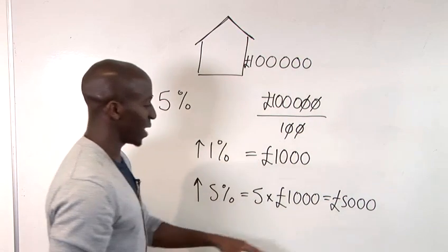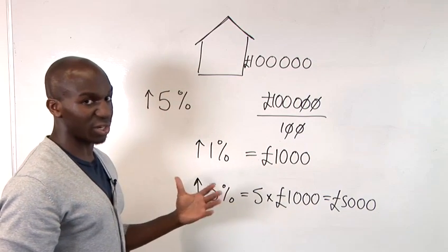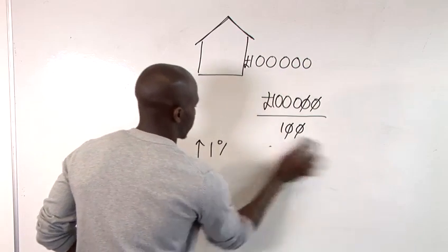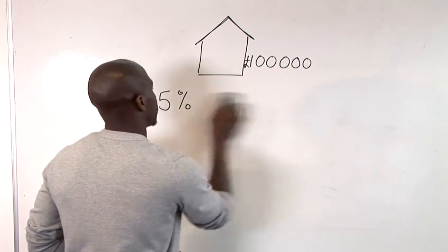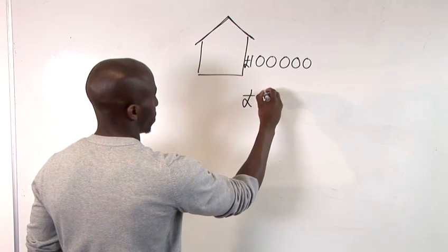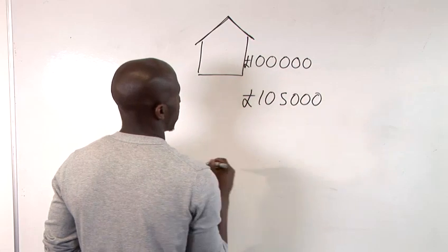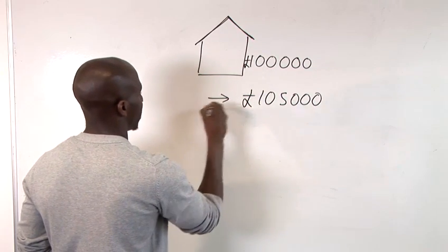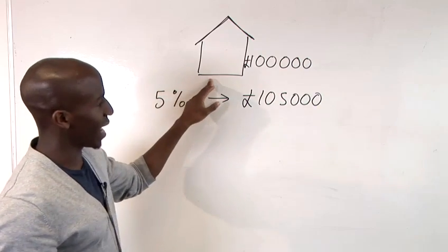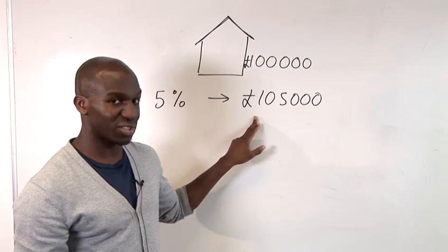Now, if we add this to this, that gives us our total for the 5% increase over a year. And this is obviously the price that you would find the house after a year. So, that's how to calculate the percentage increase.